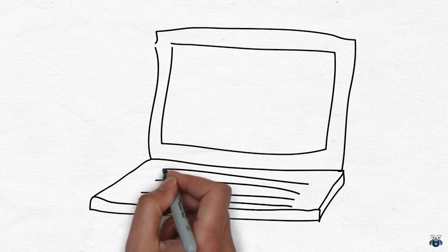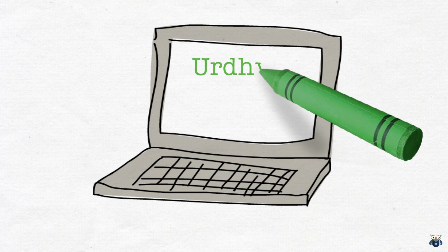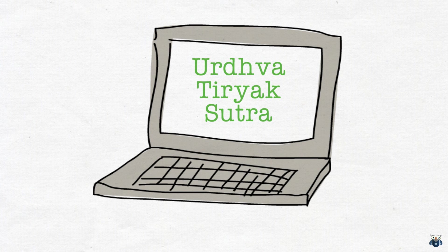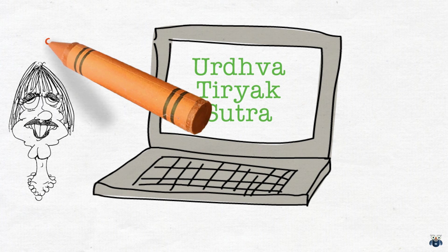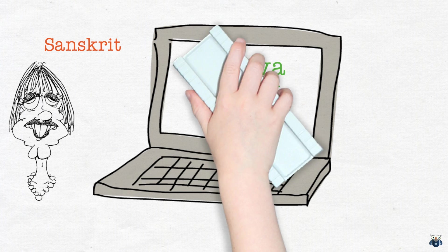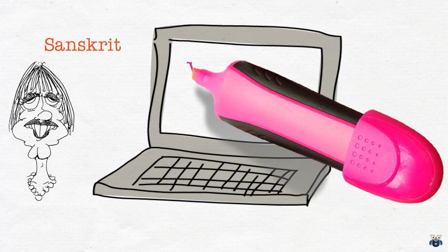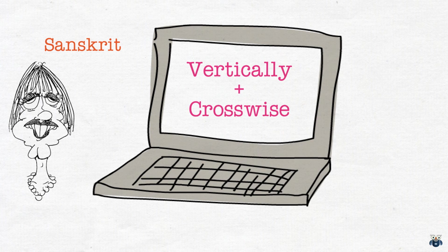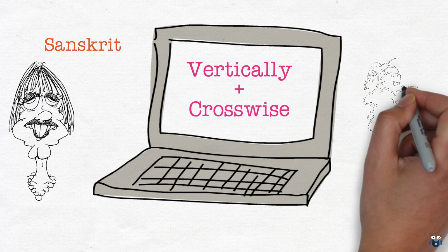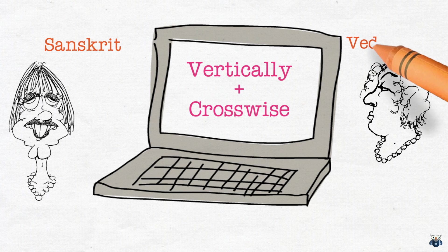The method I am going to show you in this video is called the Uddharva Tiryak Sutra. These words come from the Sanskrit language. Loosely translated, it means vertically and crosswise. This sutra or formula comes from an Indian system of mathematics called Vedic Maths. We have put up some literature on Vedic Maths in the attachments section, so please check it out. It makes for very interesting and informative reading.